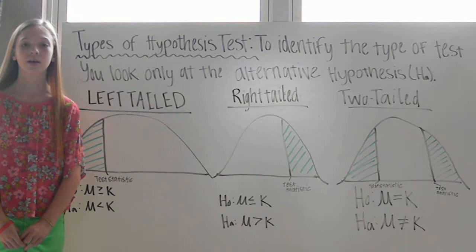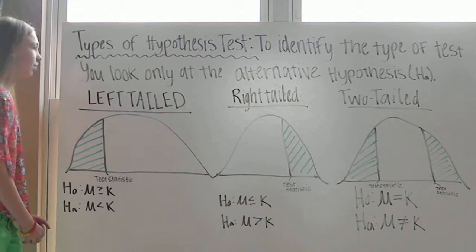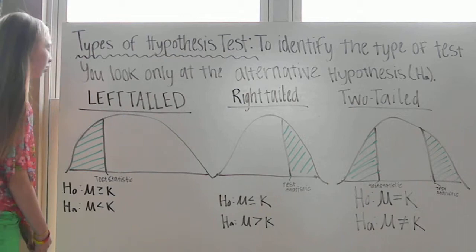If the alternative hypothesis contains a less than inequality symbol, the hypothesis test is a left-tailed test. The alternative hypothesis mu is less than k, so this would be a left-tailed test.